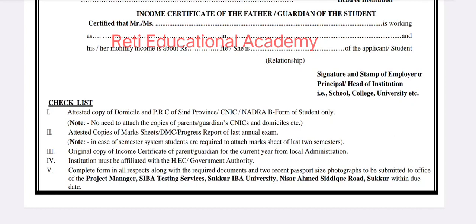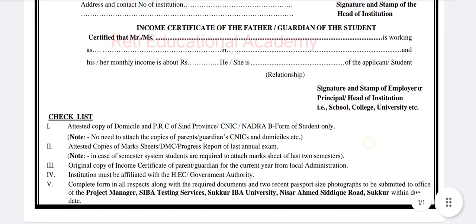Number 5: complete the form in all respects along with required documents and two recent passport-size photographs. Submit to the office of the Project Manager, SEBA Testing Service, Sukkur IBA University, Nisar Amal Siddiqi Road, Sukkur, within the due date. The due date is 30 April.